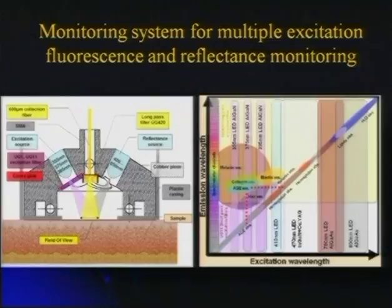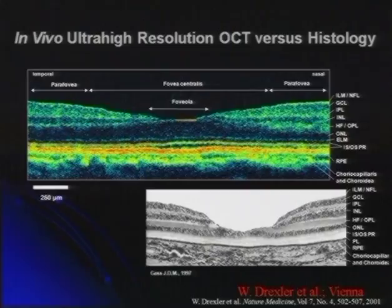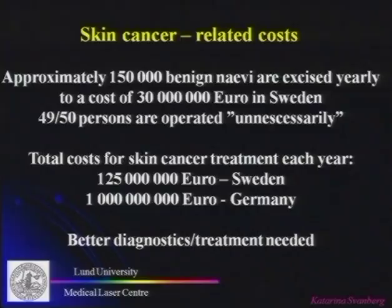We would like equipment that tells us what kind of lesion we are looking at, based on both fluorescence and reflectance — using LEDs for exciting fluorescence and measuring reflectance, because blood absorption is also an important factor. Optical coherence tomography, shown in another talk, is one success story: it is now a conventional technique in the clinic, particularly in ophthalmology.